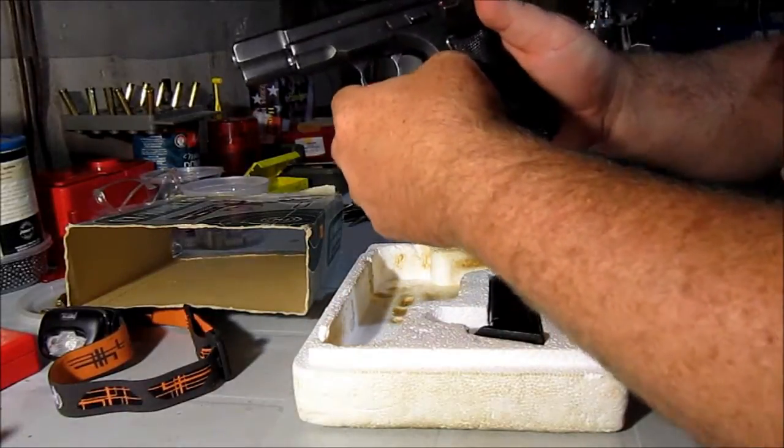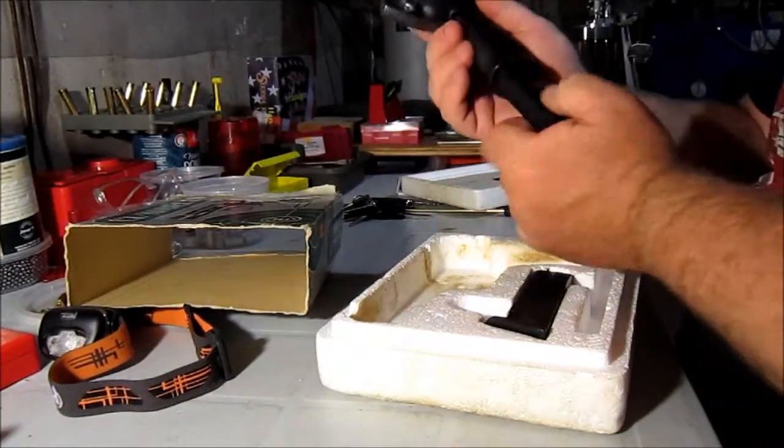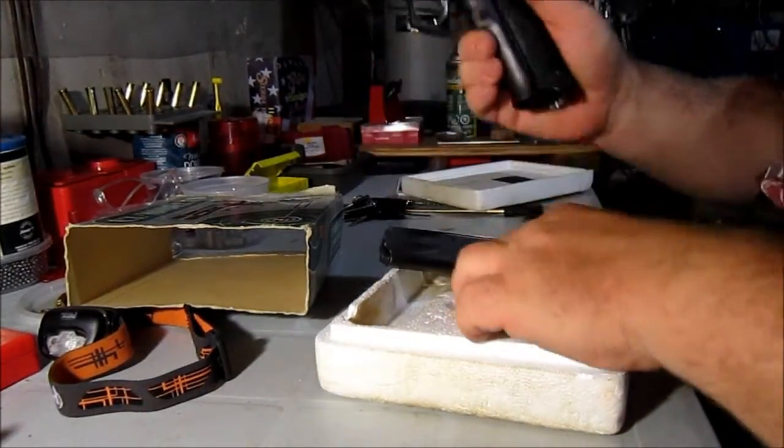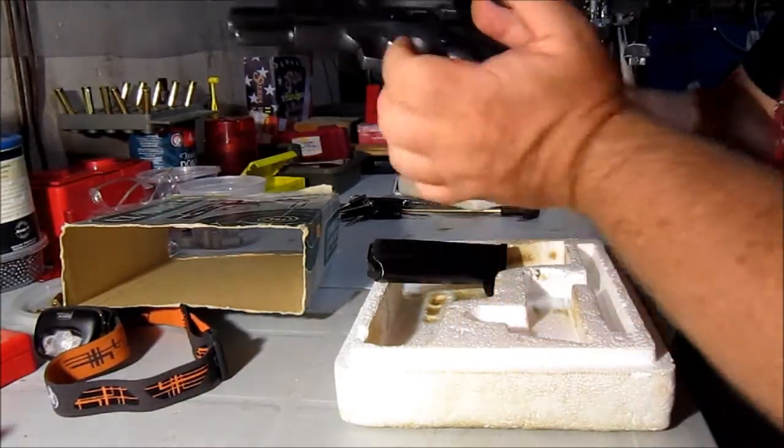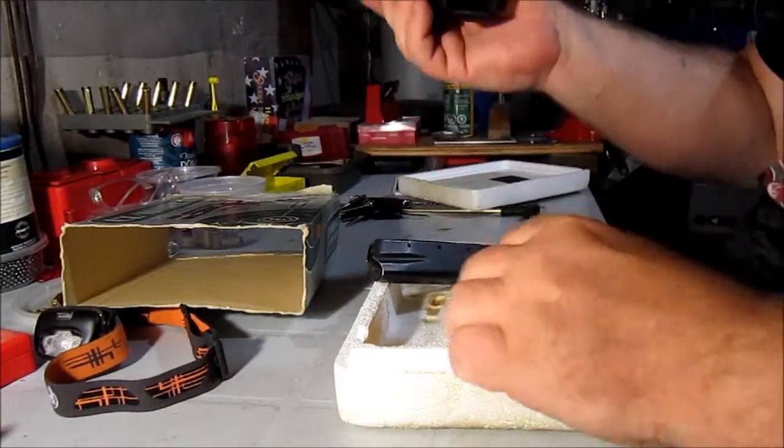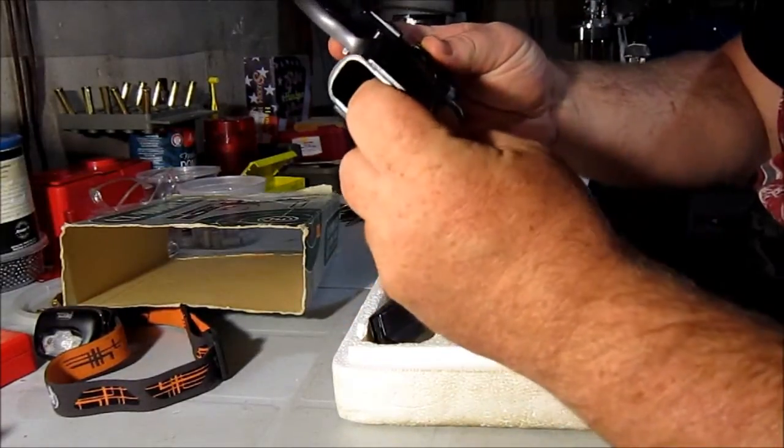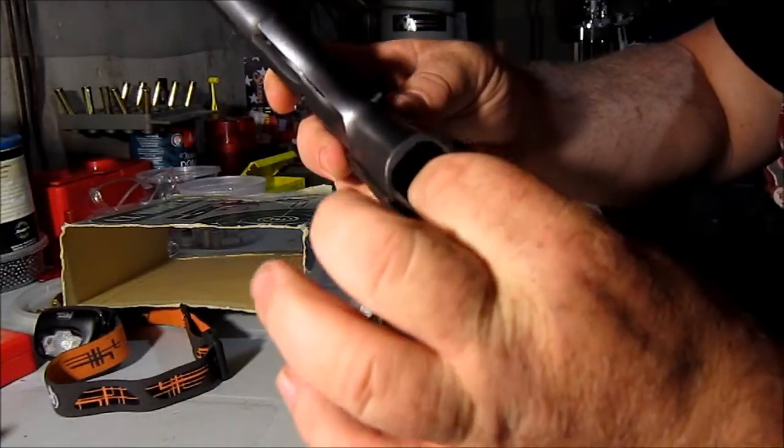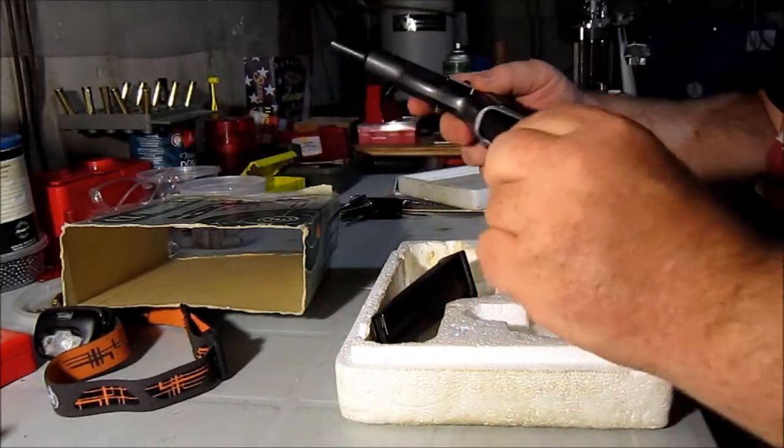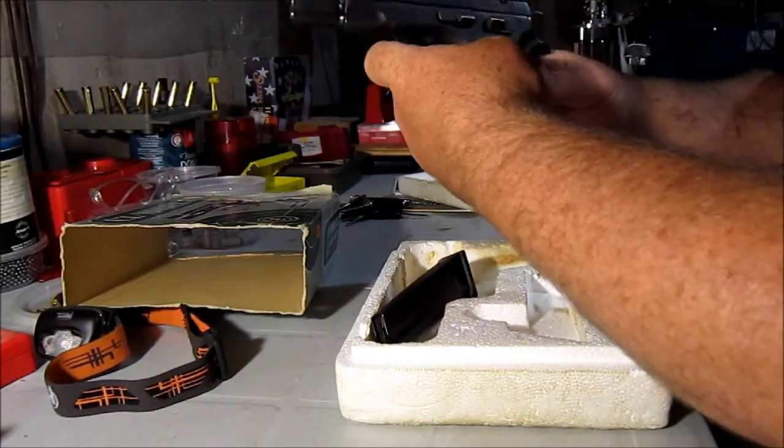Now, you'll notice one thing. That wasn't supposed to happen. You'll notice that the magazines come out, and they're not supposed to. This one must be just well broken in. In here, there's a spring. Not sure if you can hear that or not. It can be removed, but I'm not familiar enough with the firearm yet to be able to do that.